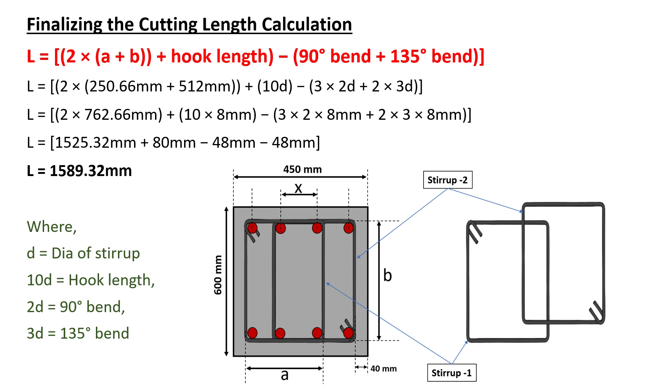Thus, the cutting length of both stirrup 1 and stirrup 2 in this four legged stirrup arrangement is 1589.32 mm.